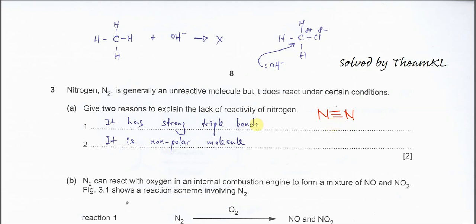The second reason, which is relatively more difficult to understand, is that nitrogen is a non-polar molecule. For example, consider methane and chloromethane. If we put methane with hydroxide, the hydroxide will not really react with the methane — nothing is formed — because methane is a non-polar molecule, so it is not very reactive.